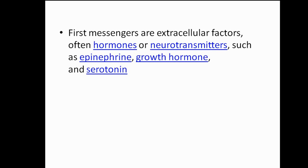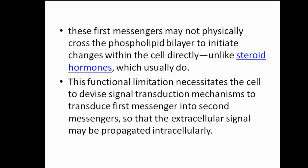The first messengers are extracellular factors, often hormones or neurotransmitters such as epinephrine, growth hormone, and serotonin. These first messengers may or may not physically cross the phospholipid bilayer to initiate changes within the cell directly, unlike steroid hormones which usually do. This limitation necessitates signal transduction mechanisms to transduce the 1st messenger into a 2nd messenger, so that the extracellular signal may be propagated intracellularly.